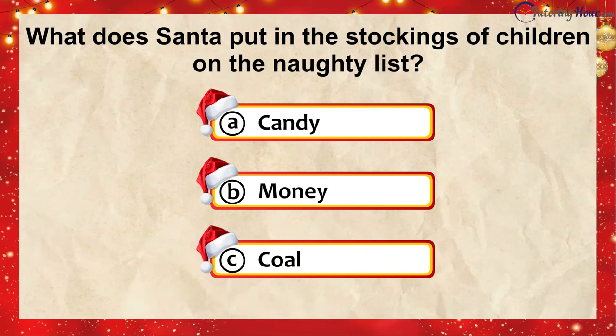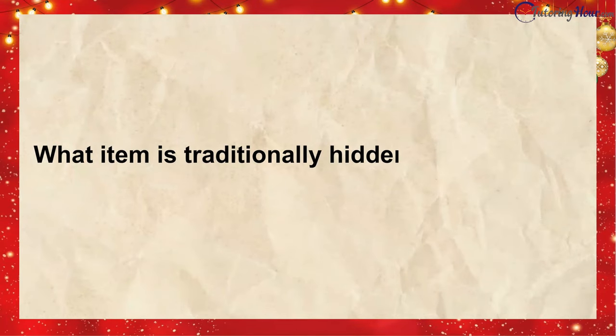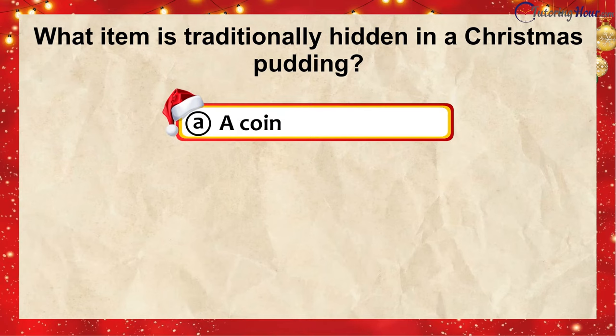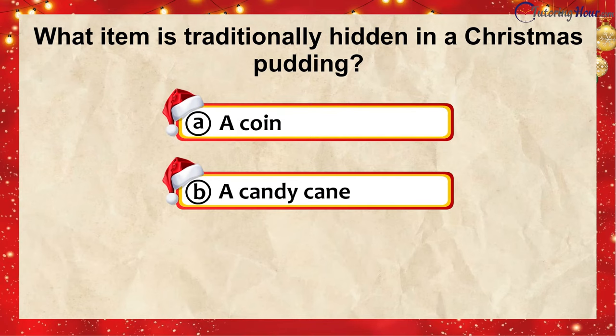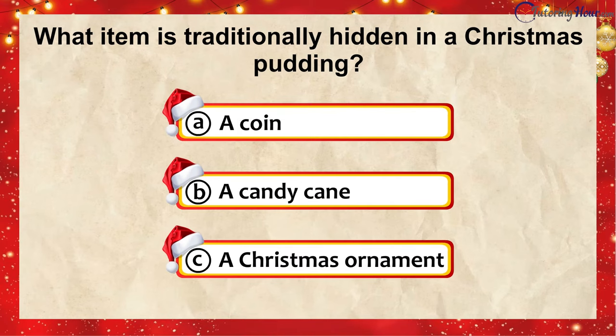And the correct answer is... Coal! What item is traditionally hidden in a Christmas pudding? Is it... A. A coin, B. A candy cane, or C. A Christmas ornament?